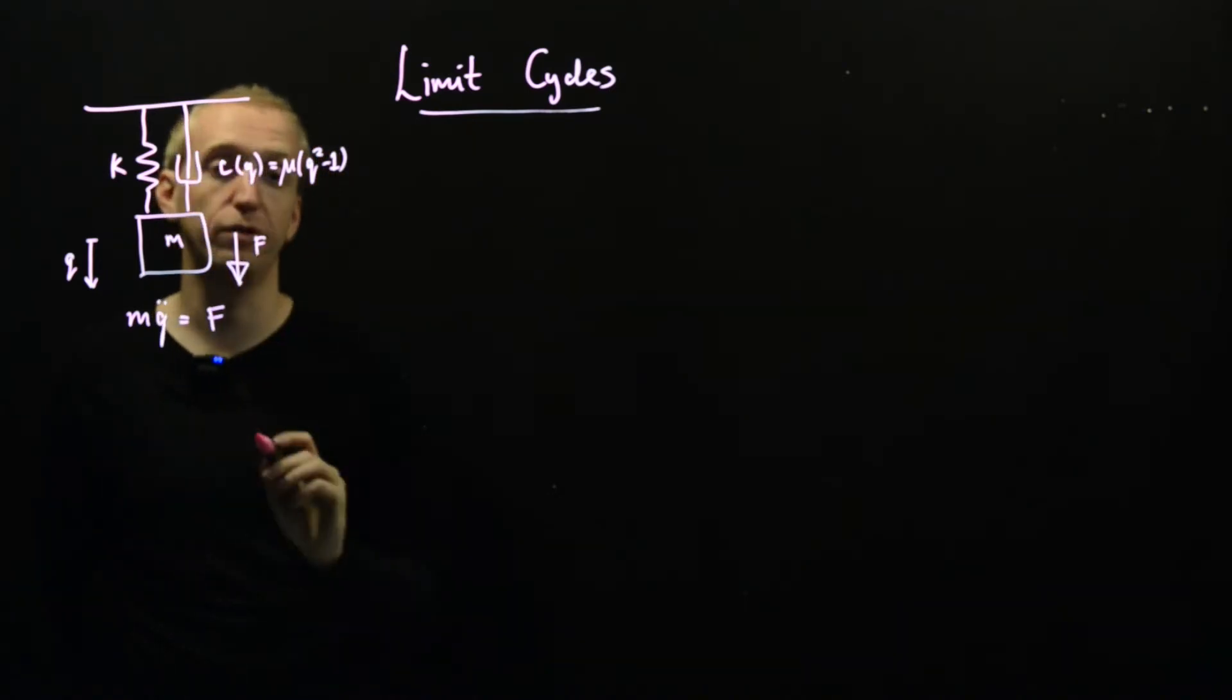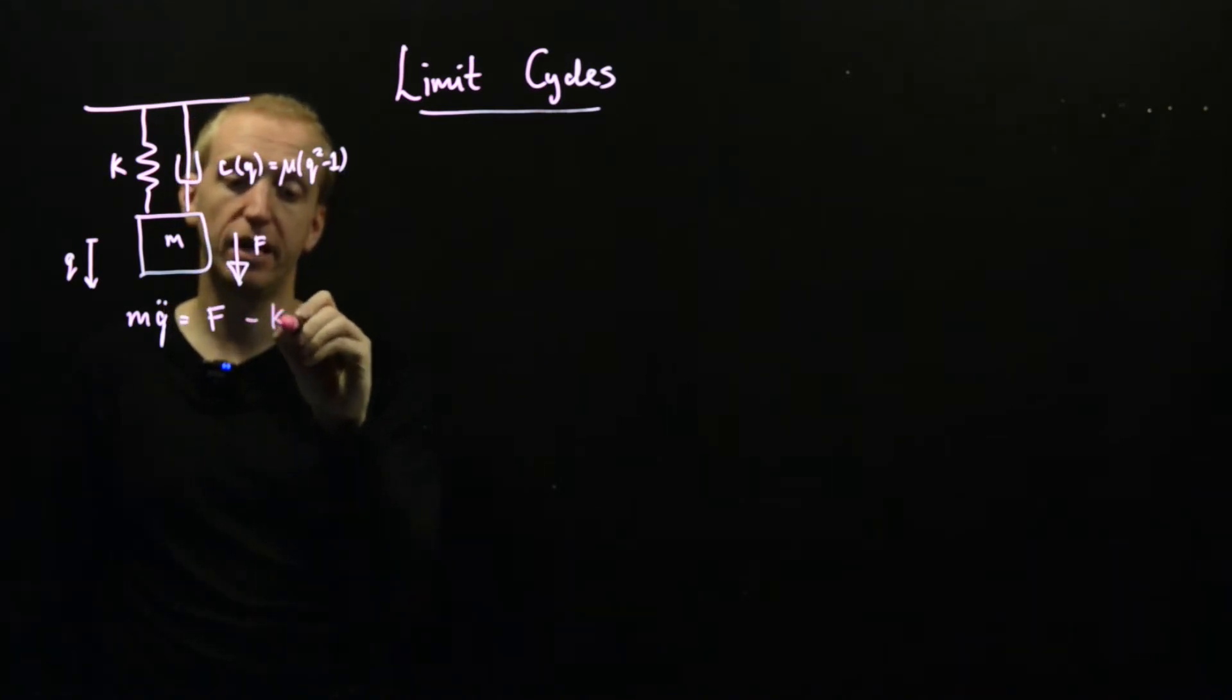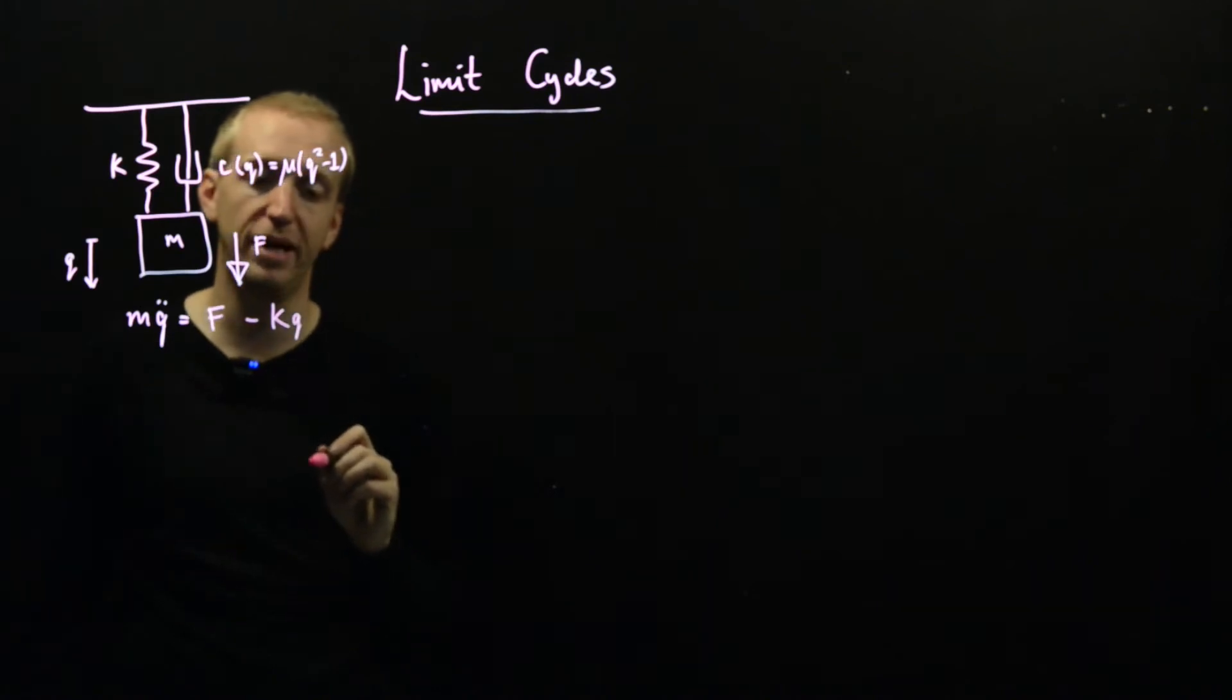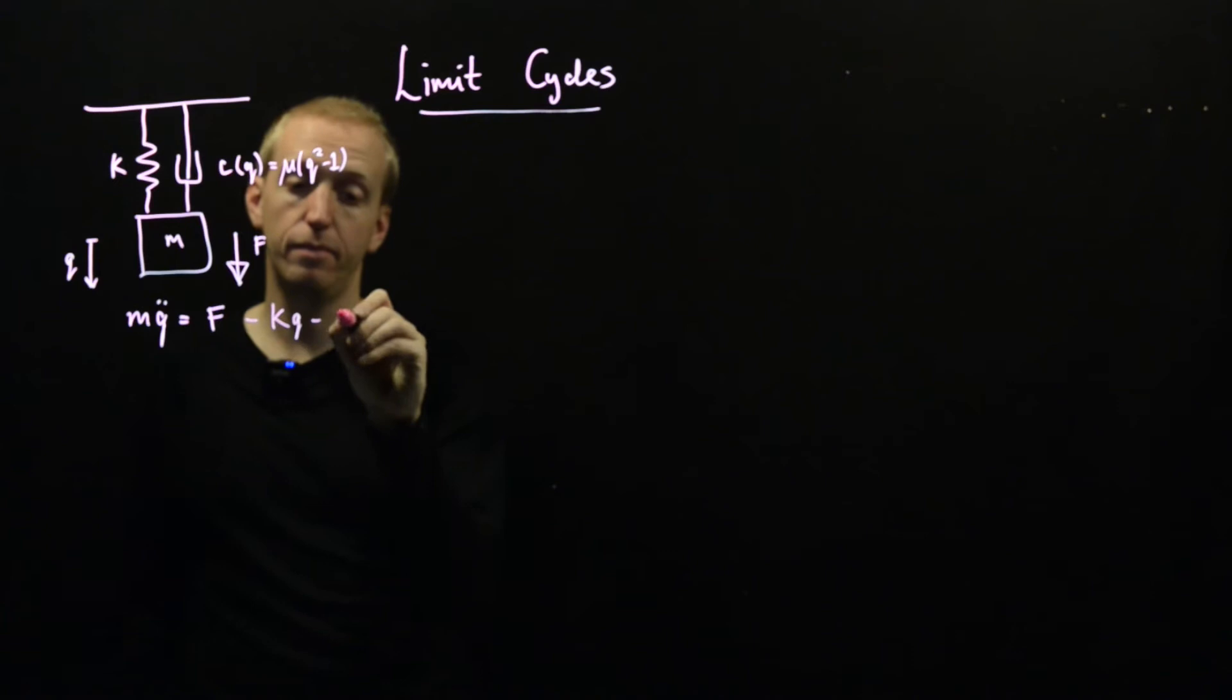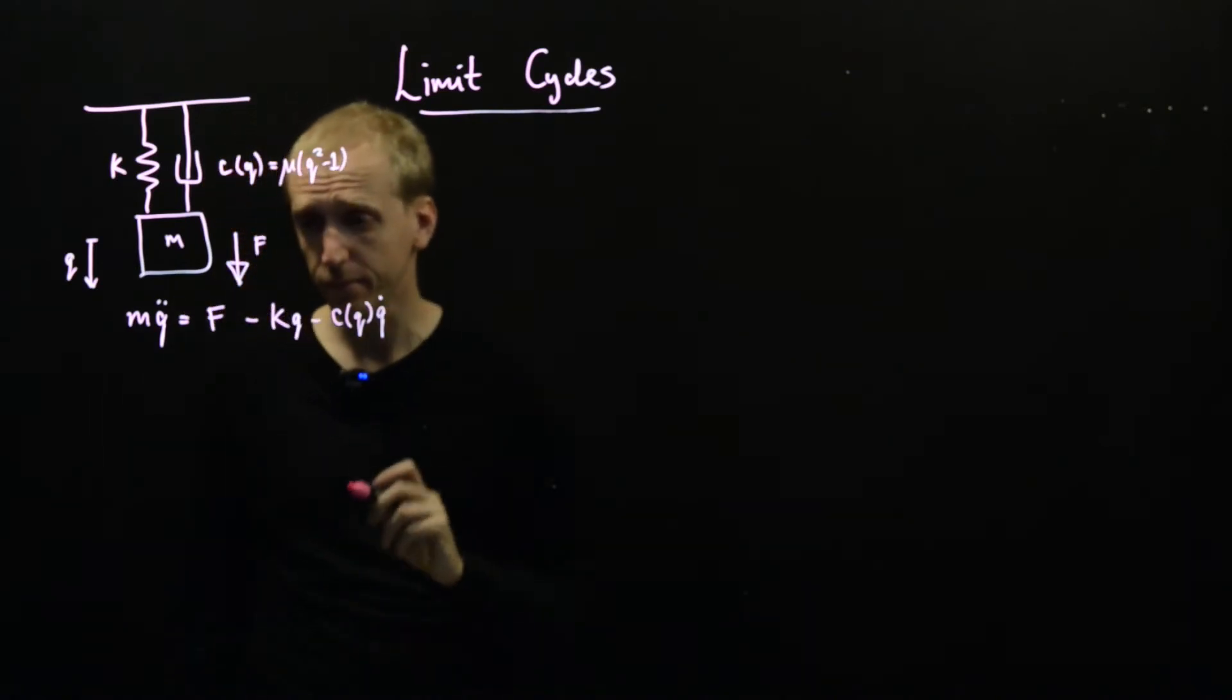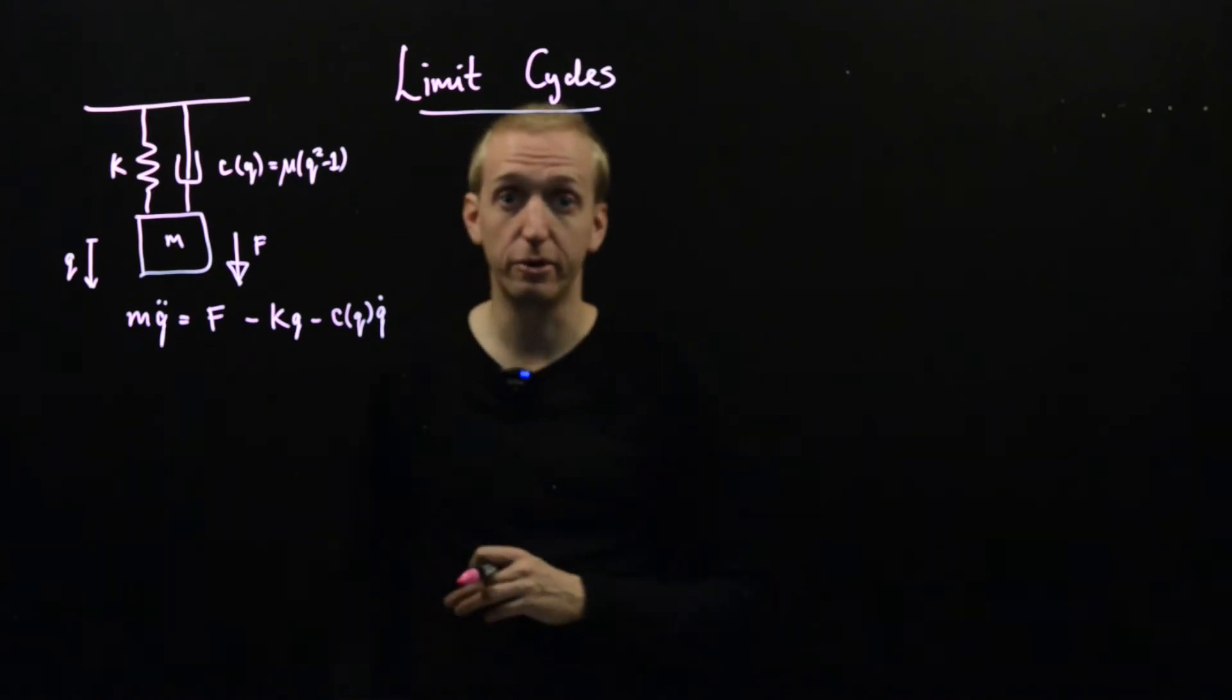So we have this force pushing us down and then we also have two forces, one from the spring and one from the damper. And these are pushing us up. So we have a minus K Q force coming from our spring. If we make Q big we'll get a tension pulling us back. And similarly from the damper we have a force that's proportional to the velocity of the mass Q dot. And the damping coefficient C of Q depends on Q in this funny non-linear way. And this is precisely the equation that we saw in the very first lecture.